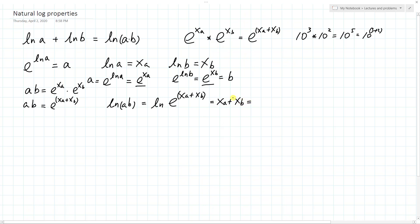And if I look back, what was the xA? There was natural log a. The xB was natural log b. So this is natural log a plus natural log b. And we have just demonstrated that natural log of ab is equal to natural log a plus natural log b, or the reverse method also works.